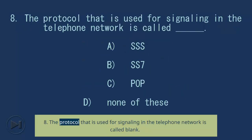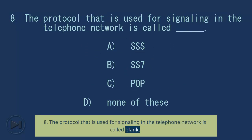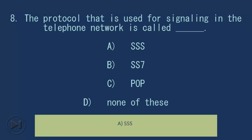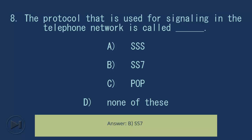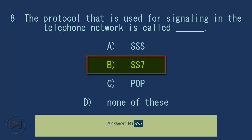Question 8: The protocol that is used for signaling in the telephone network is called blank. A. SSS. B. SS7. C. POP. D. None of these. Answer: B. SS7.